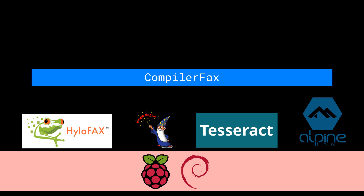So there's the whole software stack: Raspbian, HylaFAX, Tesseract, a hint of ImageMagick, a little bit of Alpine, and a bunch of glue code that I wrote to join it all together and generate faxable compilation reports.